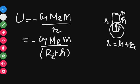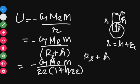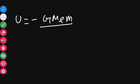Now, if you take R_E as common from the denominator, you get minus G M_E M divided by R_E, multiplied by 1 over 1 plus H by R_E. So U equals minus G M_E M divided by R_E into 1 plus H by R_E, the whole raised to minus 1.